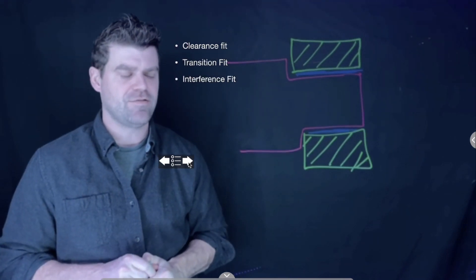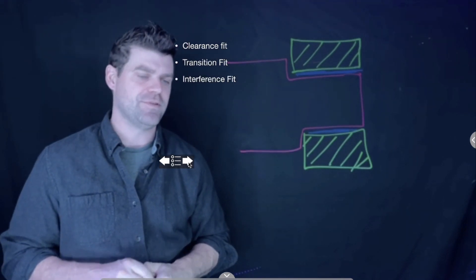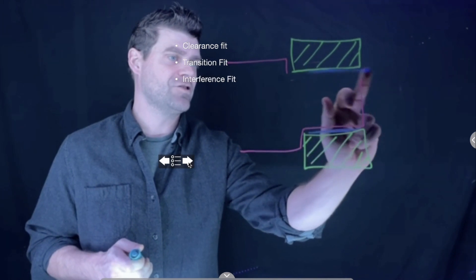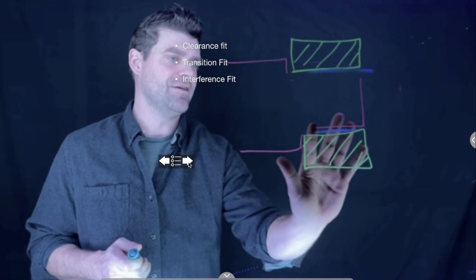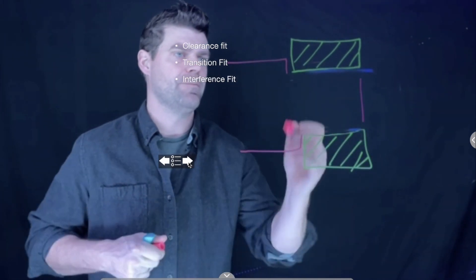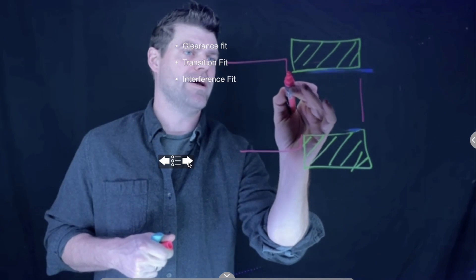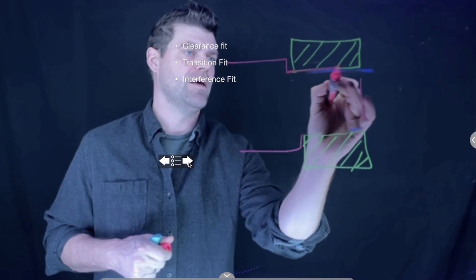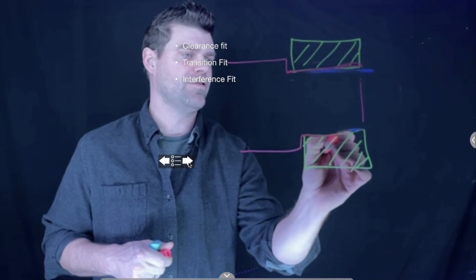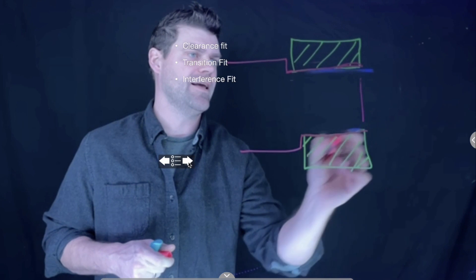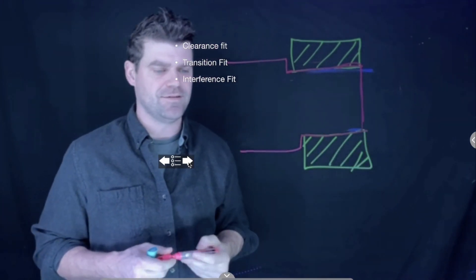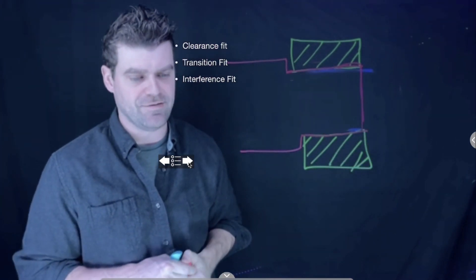An interference fit is the opposite — the actual shaft size is larger than the bore diameter. This is achieved with either some kind of force, or by applying heat or cold in some instances to make the fit.